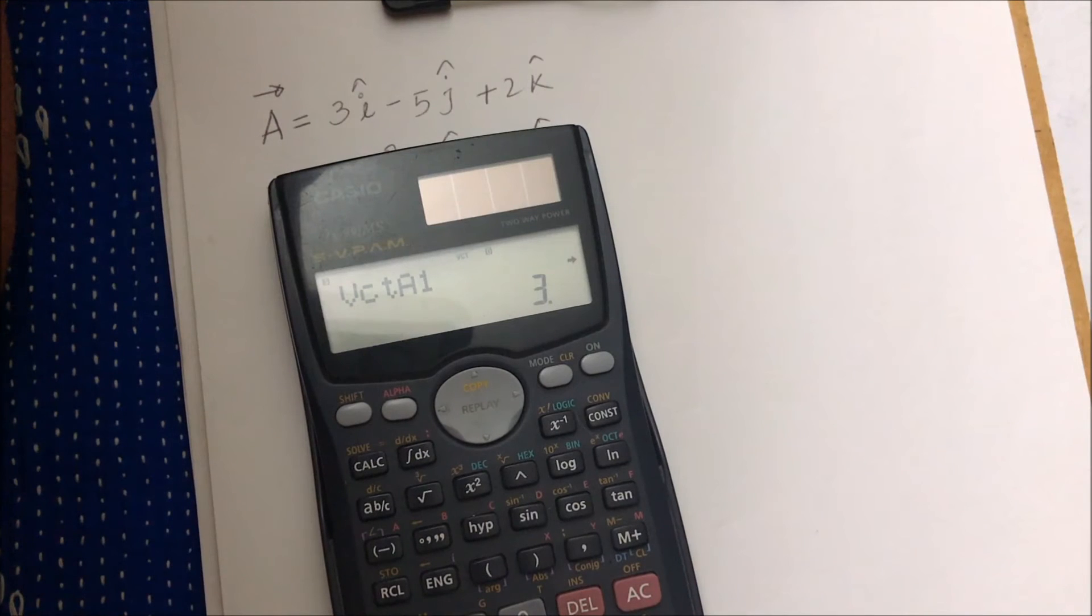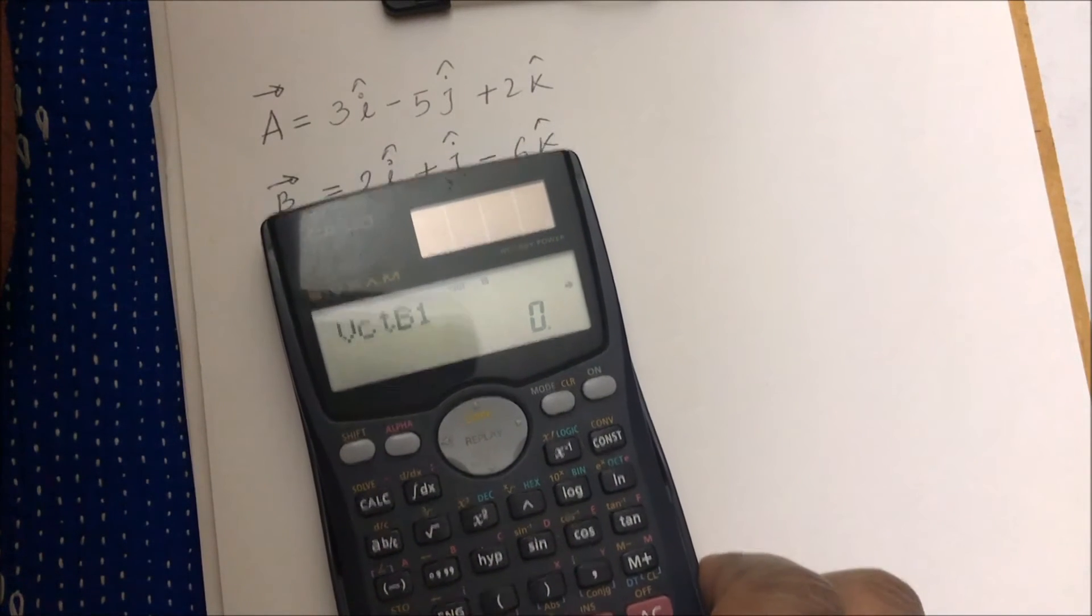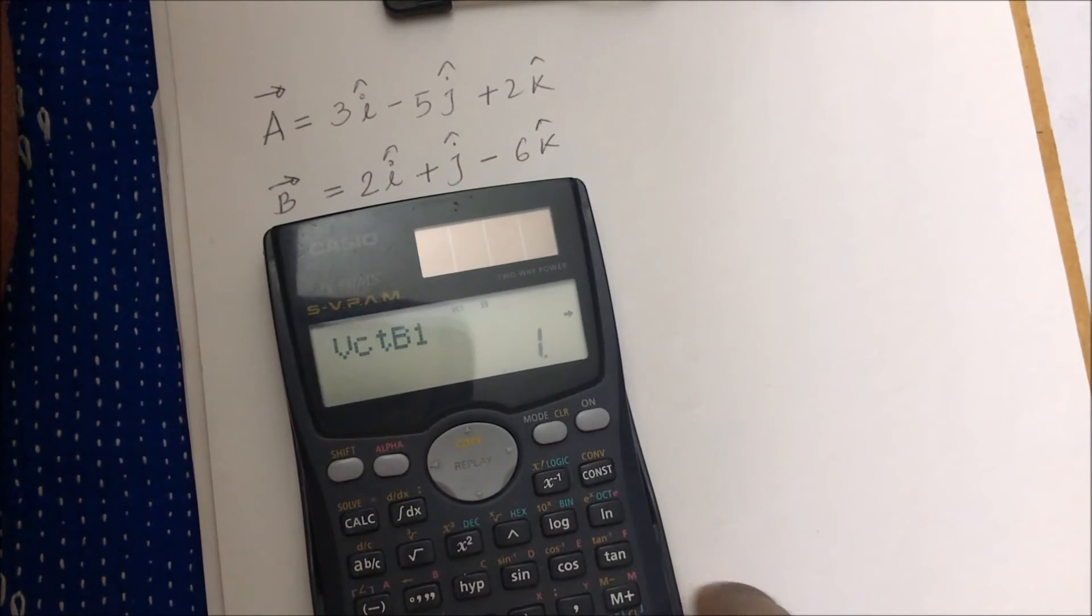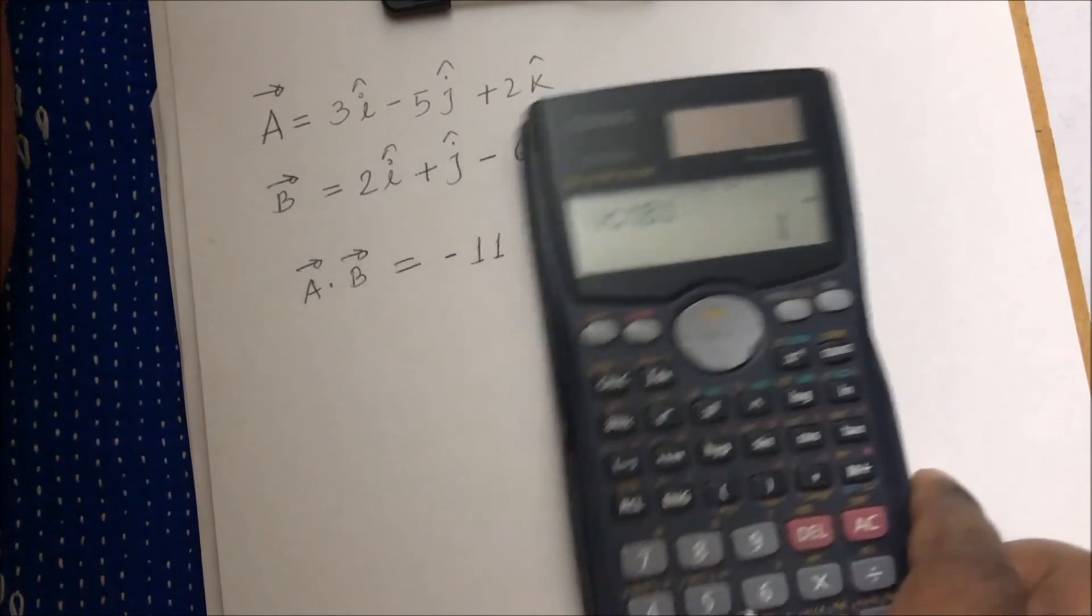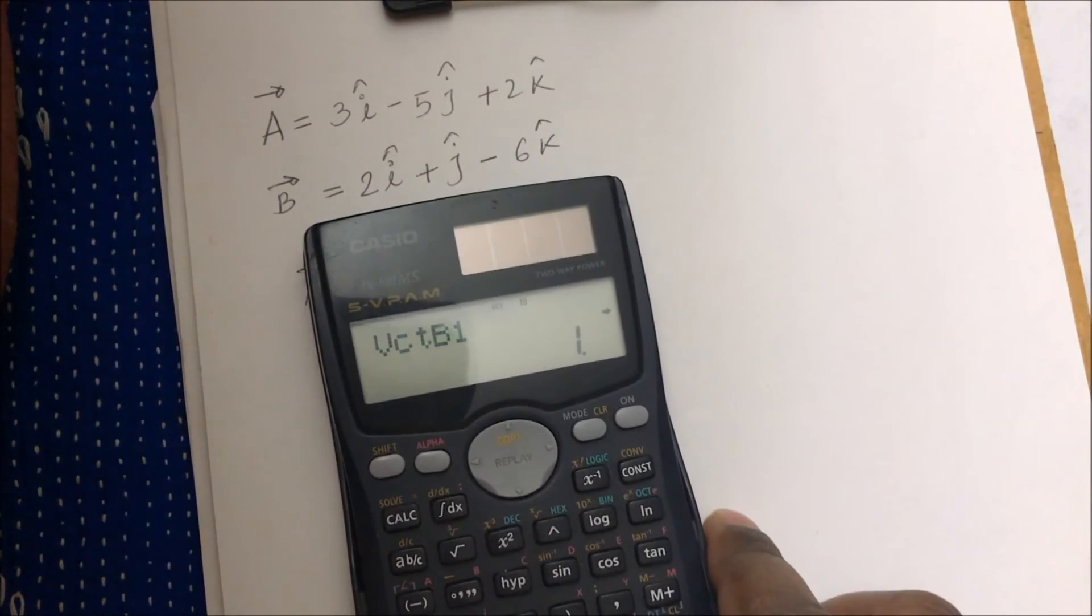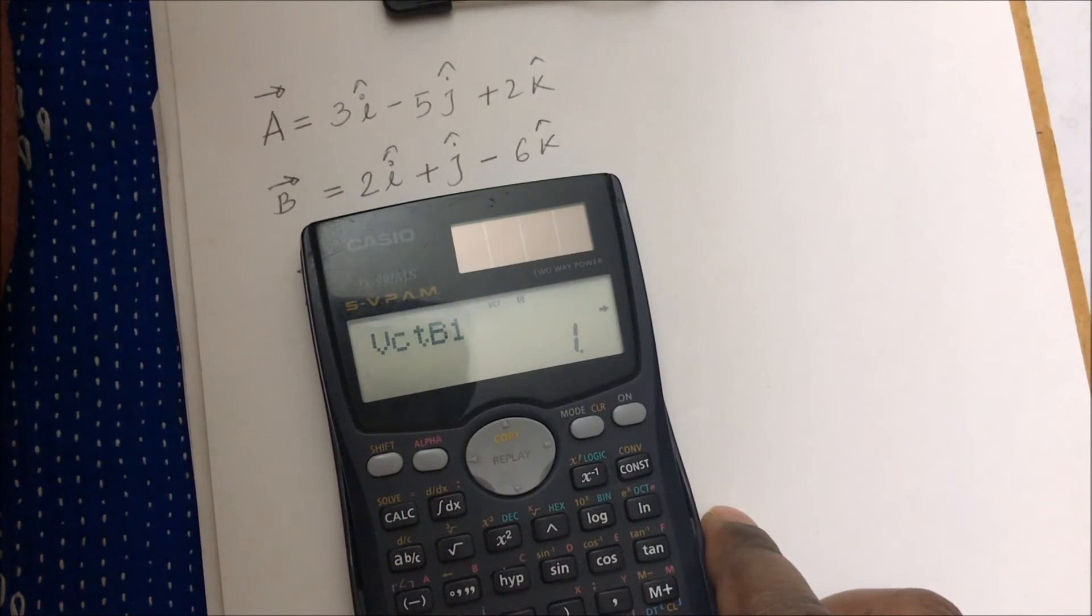Similarly, I'll put vector B. Shift five, number one for vector B, dimension is three, and first element is two, and then one, and then negative six. All right, my vector A and B is ready. Now I will do the dot and cross product. So once I wrote this vector, I can just do dot and cross product easily. I do not have to write it again and again.